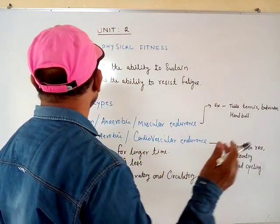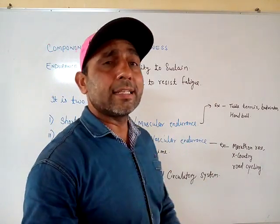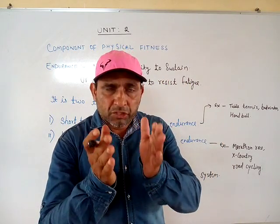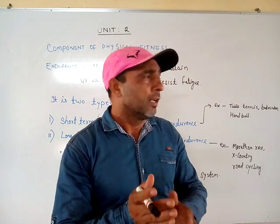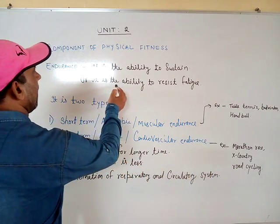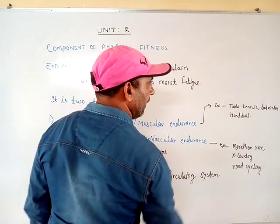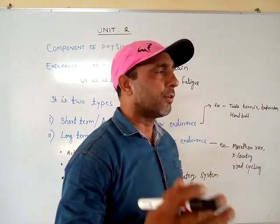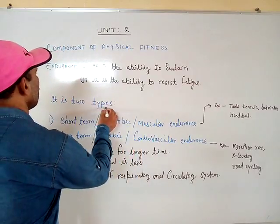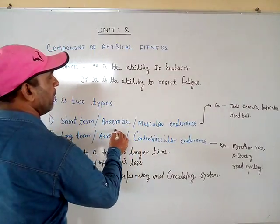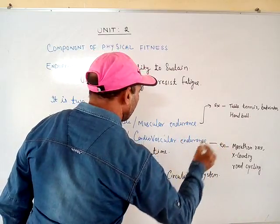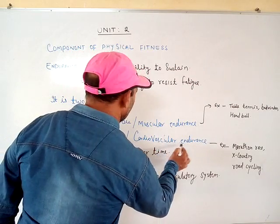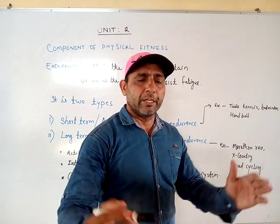To summarize: endurance is another part of physical fitness. We previously covered strength and speed. Endurance is the ability to resist fatigue. Endurance is of two types: short-term, also known as anaerobic or muscular endurance; and long-term, also known as aerobic or cardiovascular endurance. I hope that is clear.